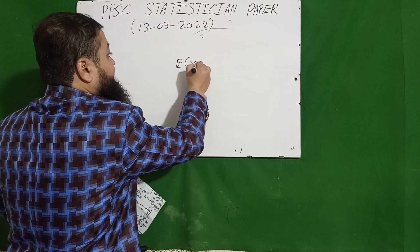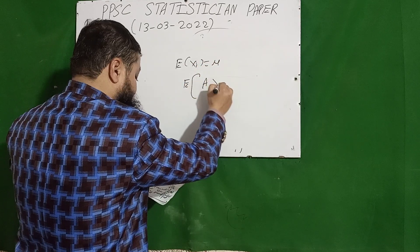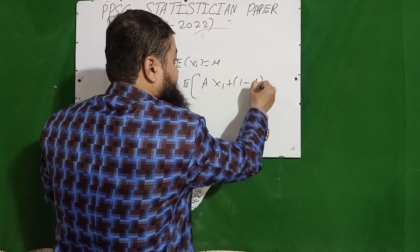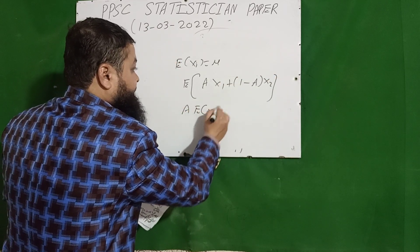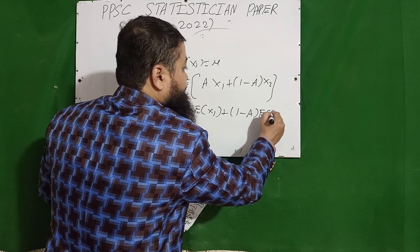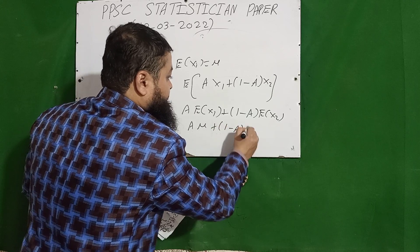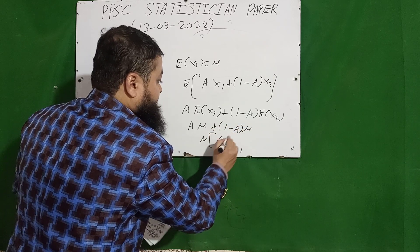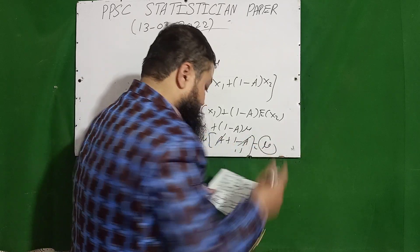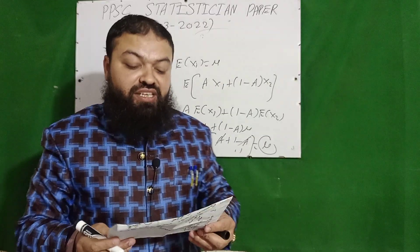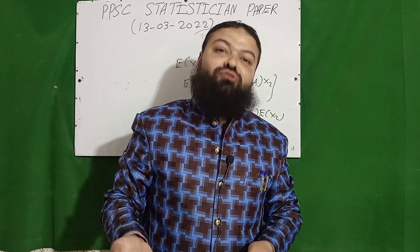The next question: given E(xᵢ) = μ, find E(ax₁ + (1−a)x₂). Since a is a constant: a·E(x₁) + (1−a)·E(x₂) = a·μ + (1−a)·μ = μ(a + 1 − a) = μ. So μ is the correct answer.